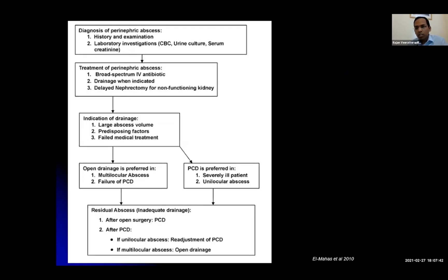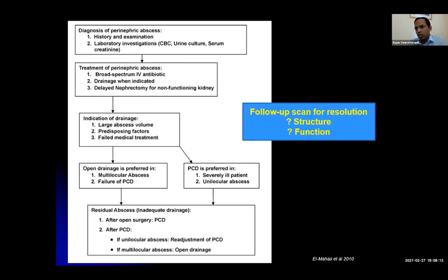This is the algorithm to keep in mind when you see these patients: initially assess and resuscitate, start a broad spectrum antibiotic, image the patient, and assess based on size and multi-locularity. If it's a large abscess above five centimetres, add percutaneous drainage alongside antibiotic treatment. If this fails, move on to surgery. For follow-up, always think about the structure and function of the urinary tract — imaging such as ultrasound or CT and a DMSA scan in a few weeks will tell you whether there's residual function left in that kidney, if you're considering a delayed nephrectomy.